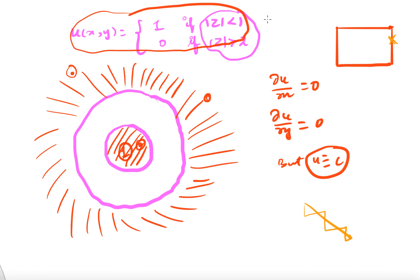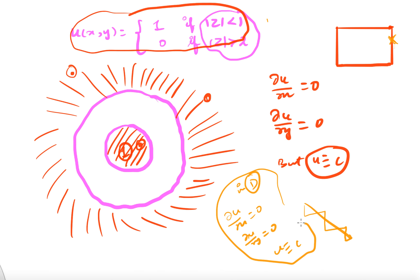So both openness and connectedness are required for proving this theorem. In this way, this theorem — that if ∂u/∂x equals 0 and ∂u/∂y equals 0 in D, where D is a domain, then u equals constant — will be used many times in all the theorems we will prove in complex analysis. So this domain is actually important. You now have a flavor of how the properties of openness and connectedness of the domain are important in proving theorems. In the coming videos, we will have more interesting and exciting results in complex analysis. Thank you.